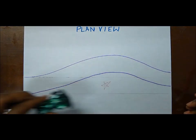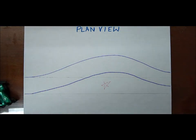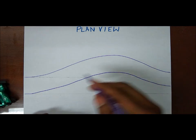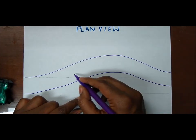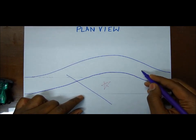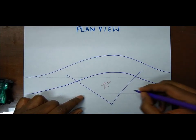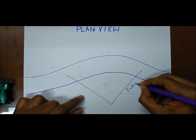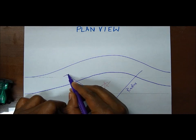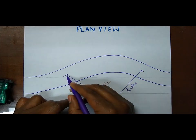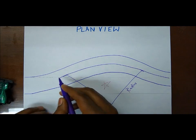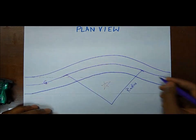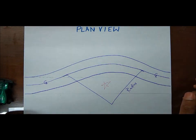Every single road that has a horizontal curve will also have an associated radius. This new planned route is going to have a radius associated with it. I'm drawing it right now — that is the radius, and it is drawn to the center line of the road. The center line is sometimes marked distinctively, and all radii are always drawn to the center line of the road.